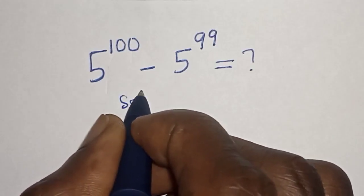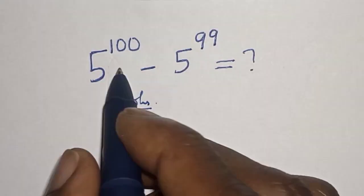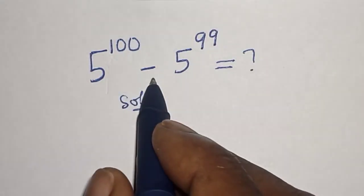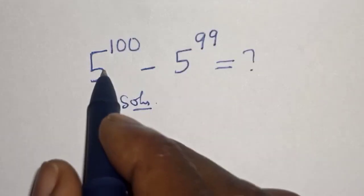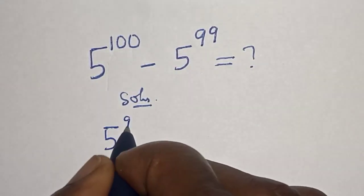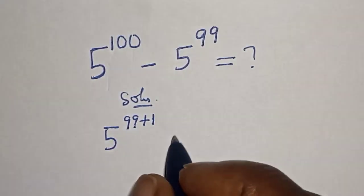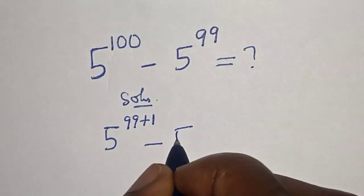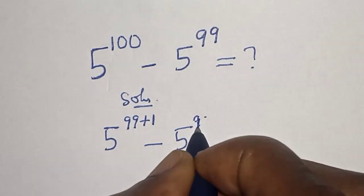Solution. 5 raised to power 100 minus 5 raised to power 99. This can be written as 5 raised to power 99 plus 1 minus 5 raised to power 99.